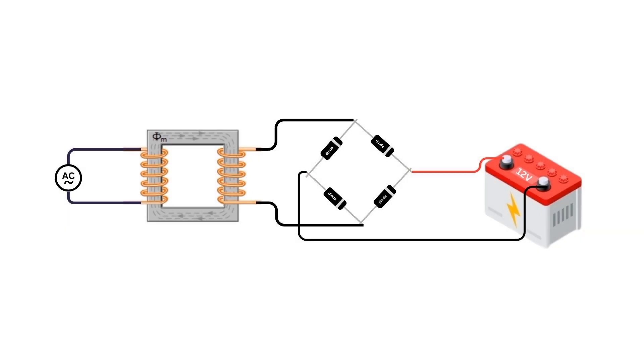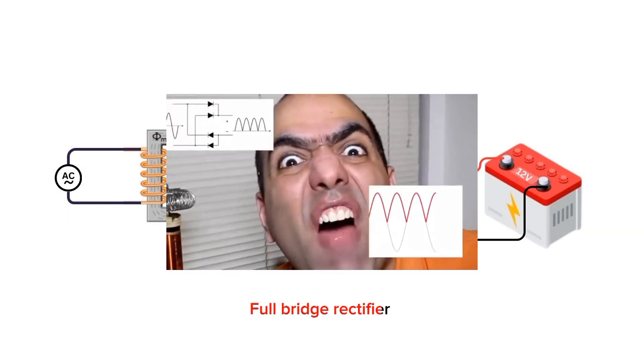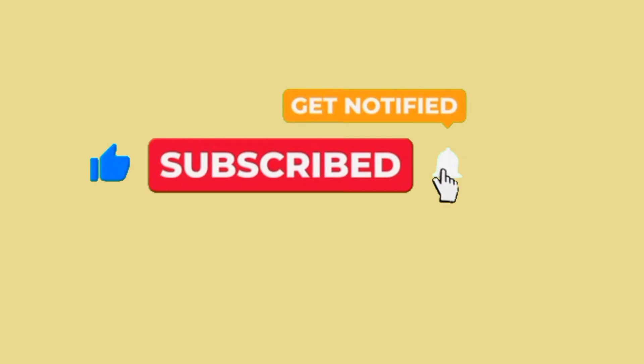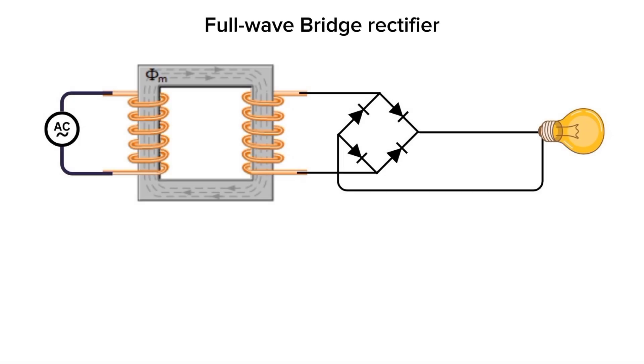Now, let's see the most commonly used full bridge rectifier. But before we continue, if you're enjoying this video, please ensure to like and subscribe to the channel. A bridge rectifier circuit consists of four diodes arranged in a bridge configuration. Let's see how it works.